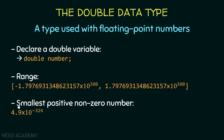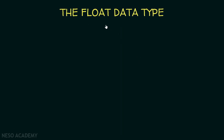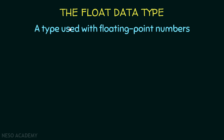Now let's see the smallest positive non-zero number that can be stored in a double variable. It is 4.9 multiplied by 10 to the power negative 324 — so this is a very very small number. A double variable is therefore very precise. Finally, a double takes 8 bytes in memory.